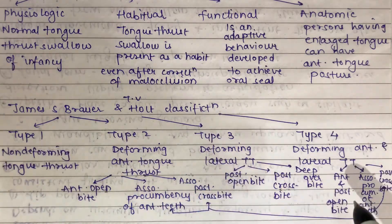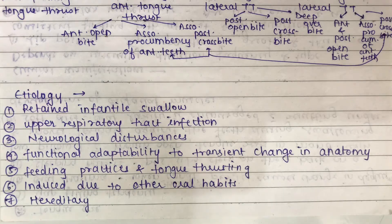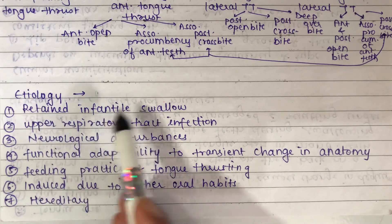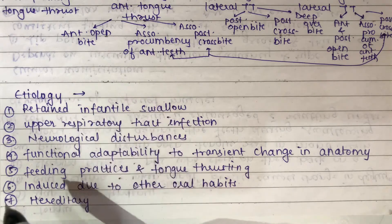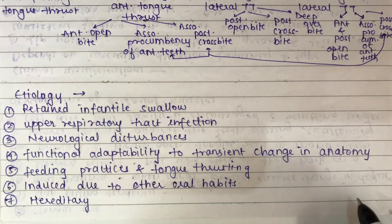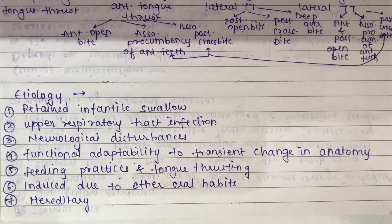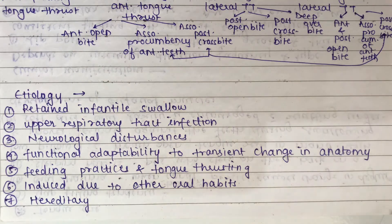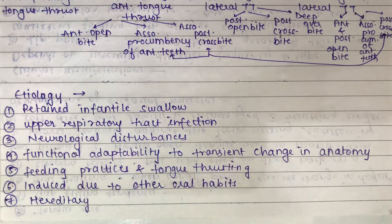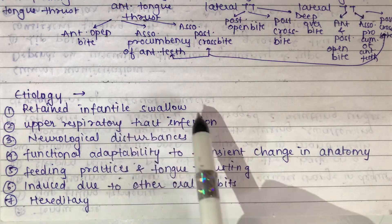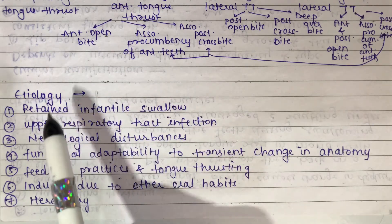The first etiological factor is retained infantile swallow. During the normal infantile swallow, the tongue lies between the gum pads and the maxilla and is stabilized by contraction of the facial muscles, especially the buccinator. This pattern disappears on eruption of the buccal teeth of the primary dentition. When this infantile swallow is retained over time, it leads to tongue thrust.